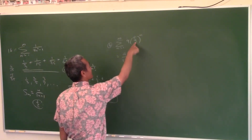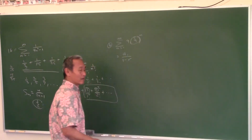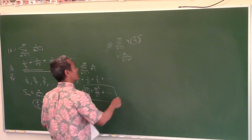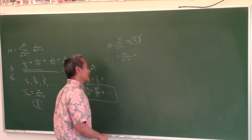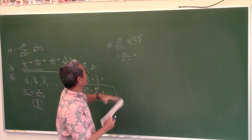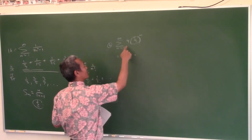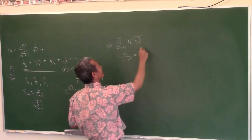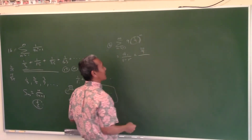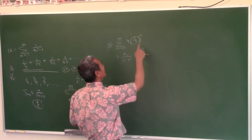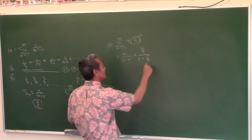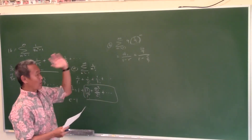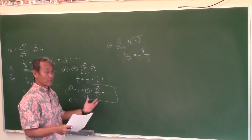This is the common ratio — the thing in parentheses — which is between negative 1 and 1, so we can use the formula. The sum of this infinite geometric series is the first term divided by 1 minus r. The number in the parentheses is r. If you plug in 1 you get 27, so that's the first term. If you don't know, just write out the first three or four terms to confirm it's geometric.